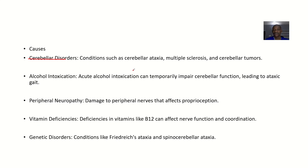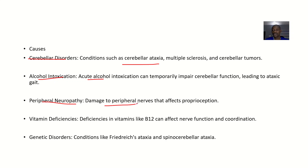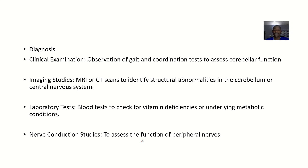Causes include cerebellar dysfunction — conditions like cerebellar ataxia, multiple sclerosis, or cerebellar tumors can cause this type of gait. Alcohol intoxication can temporarily impair cerebellar function, leading to ataxic gait. Peripheral neuropathy — damage to peripheral nerves — can affect proprioception. Vitamin deficiencies, such as vitamin B12, can affect nerve function and coordination. Genetic disorders like Friedreich's ataxia or spinocerebellar ataxia can also cause ataxic gait.